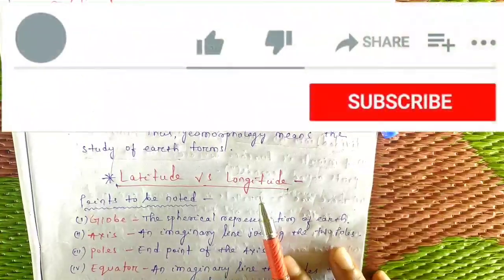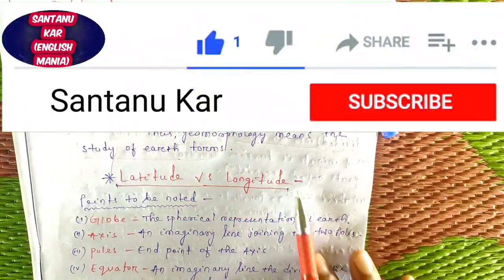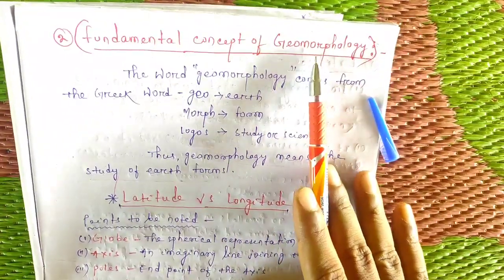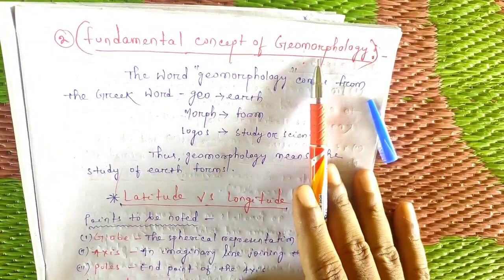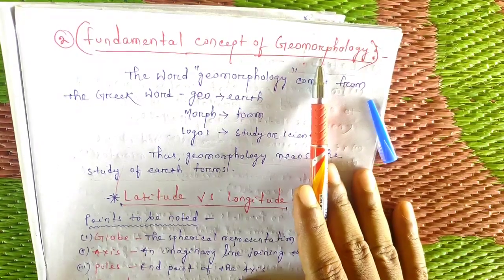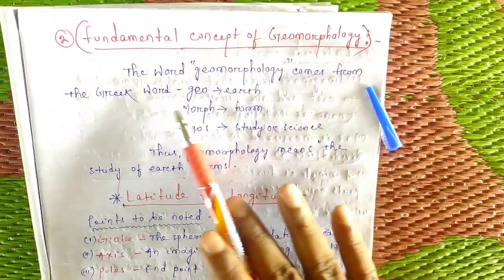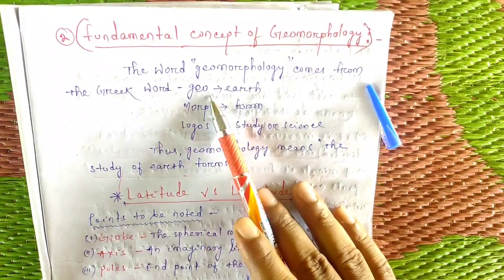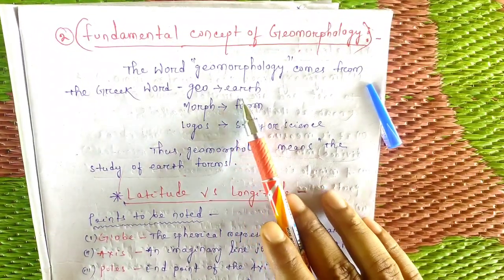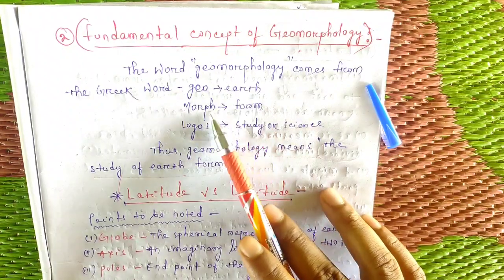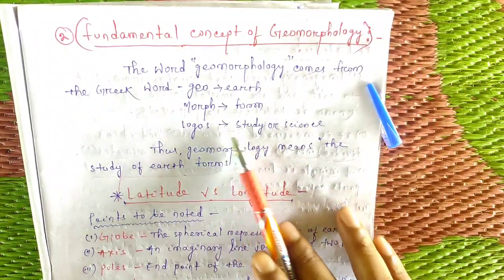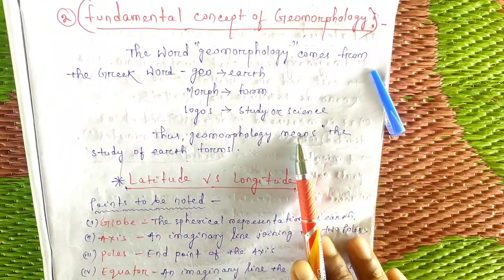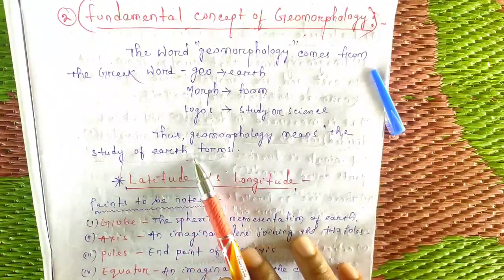Social science and social studies cover a very important question — geomorphology, a fundamental concept. The word geomorphology comes from the Greek words: geo meaning earth, morph meaning form, and logos meaning study or science. So geomorphology is the study of earth forms.